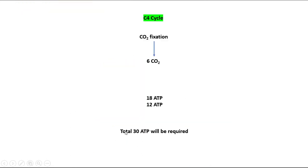By the C4 cycle, a total of 30 ATP will be required to fix 6 CO2 and generate one molecule of fructose 6-phosphate.